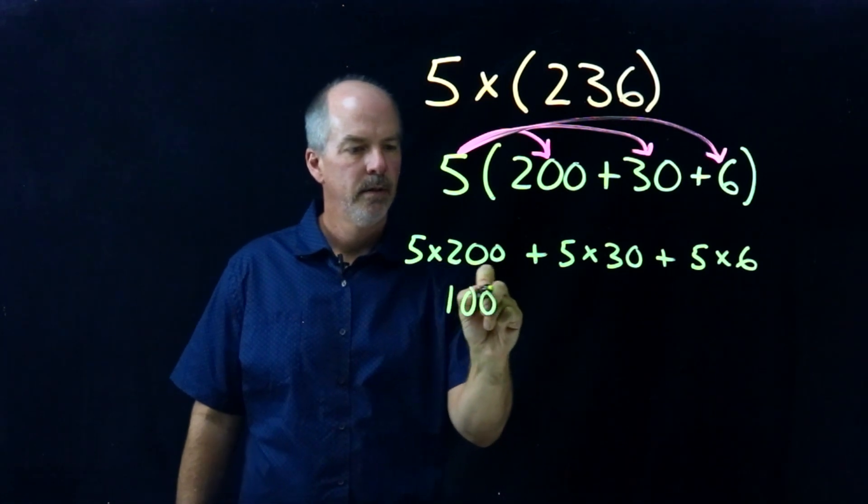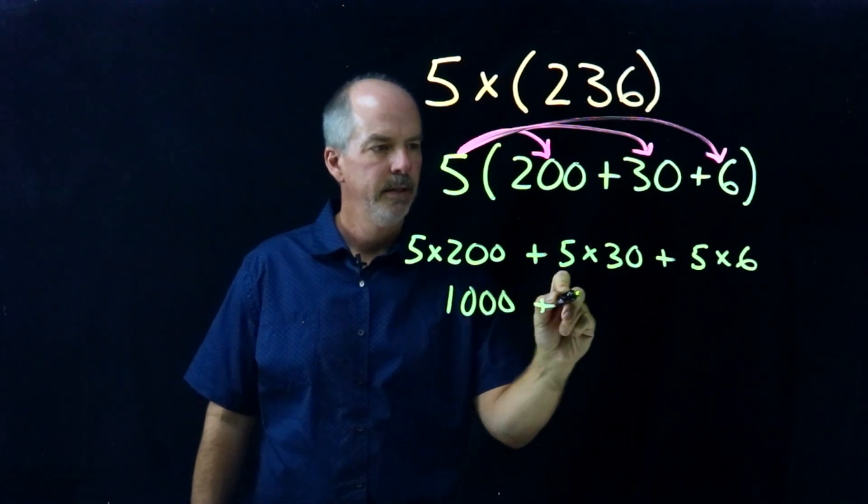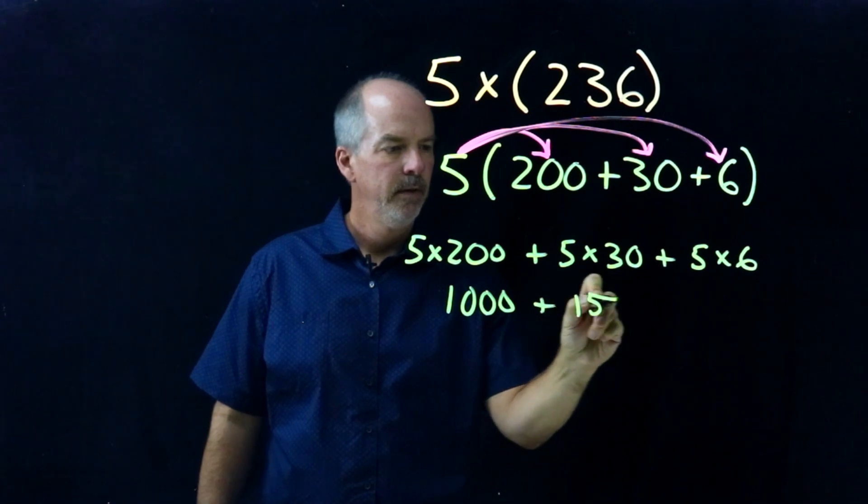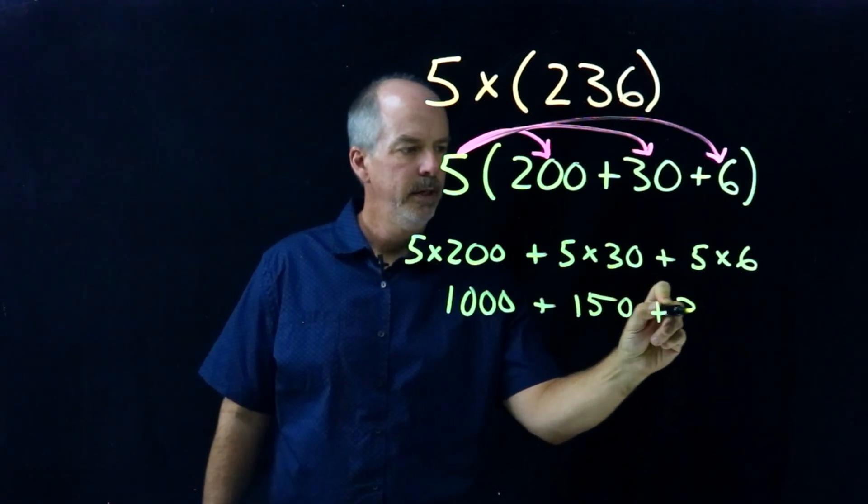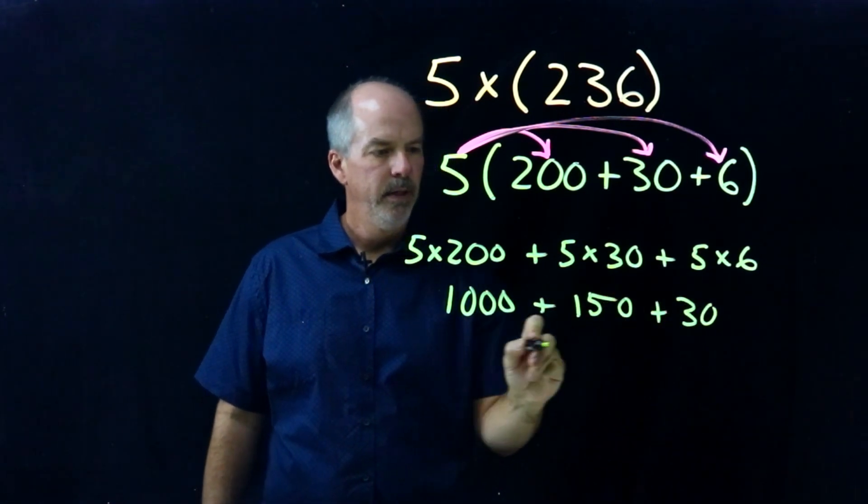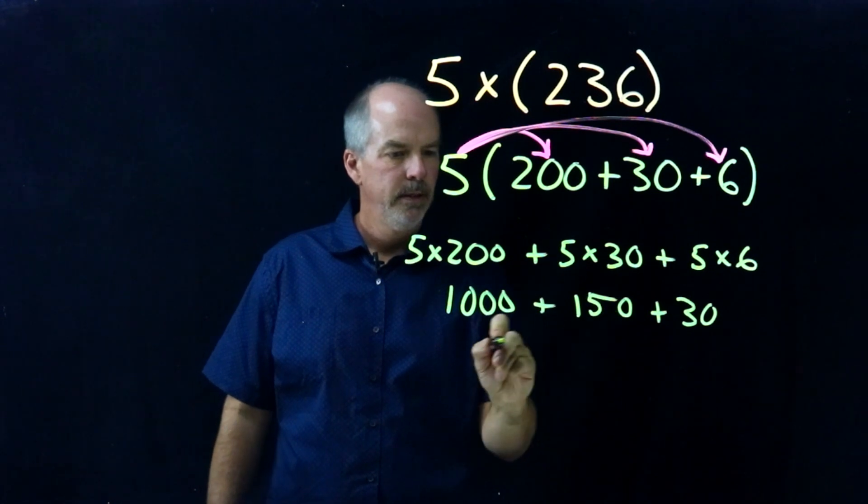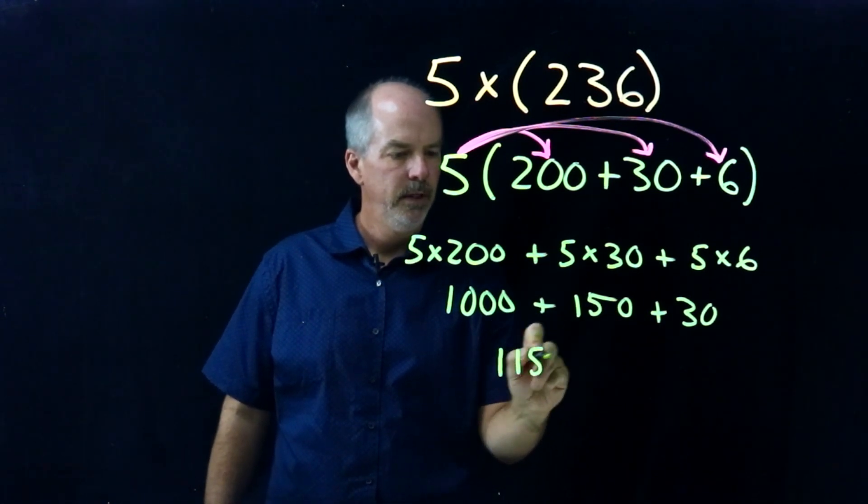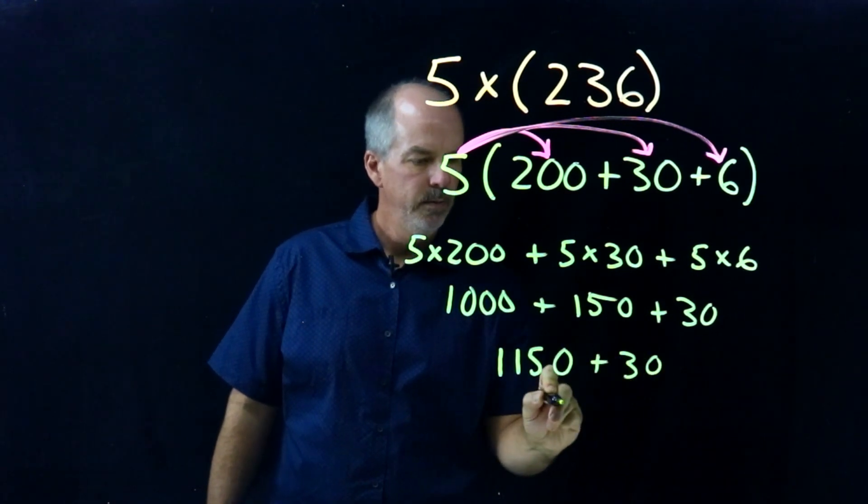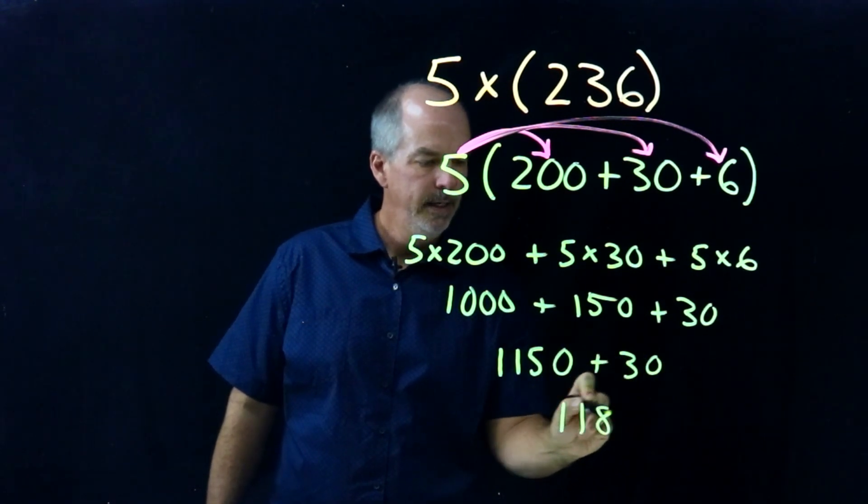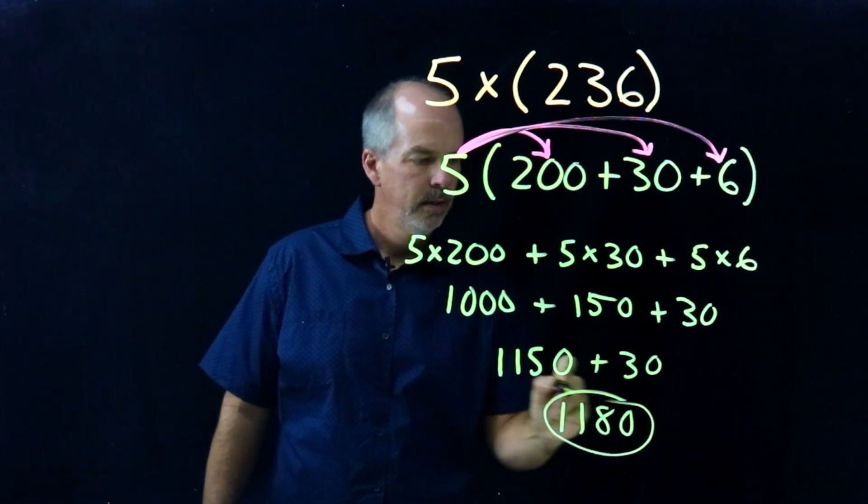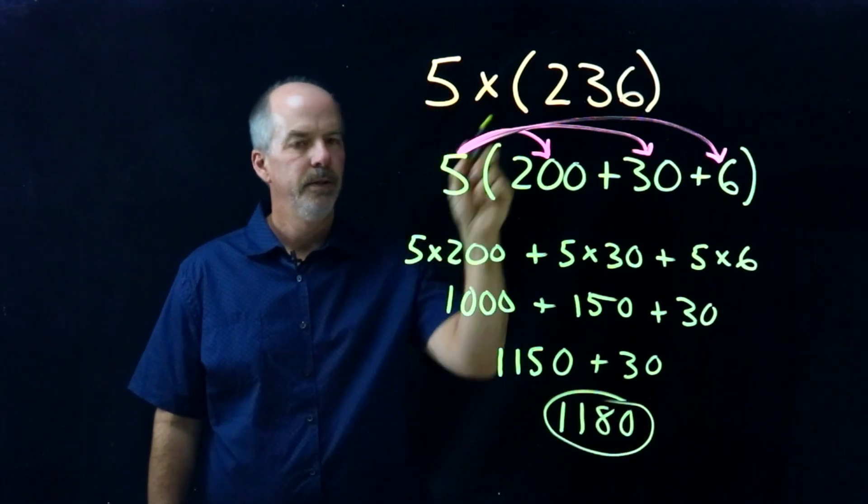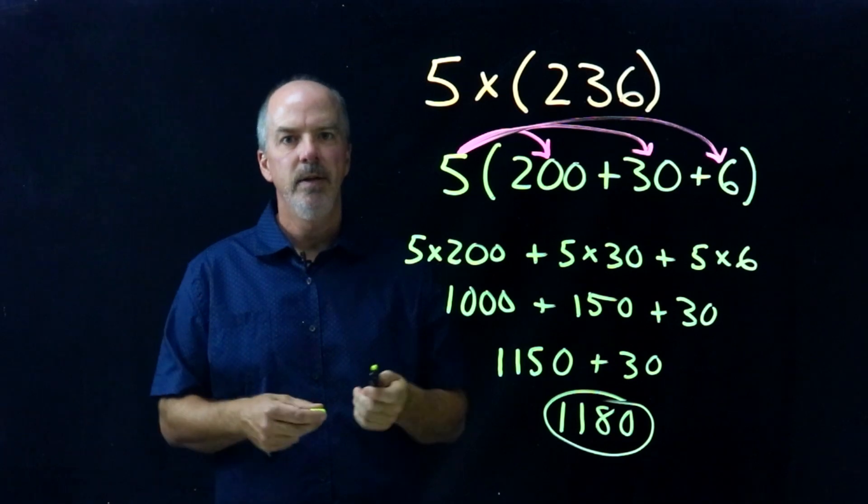So that's one thousand plus one hundred fifty plus thirty. And that would be one thousand plus one fifty is one thousand one hundred fifty plus thirty. And that's one thousand one hundred eighty. So we solved that by using the Distributive Property.